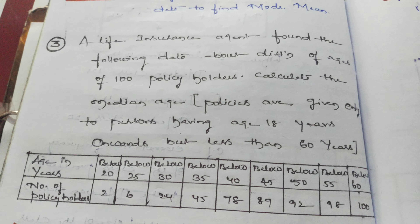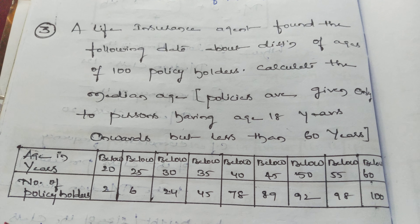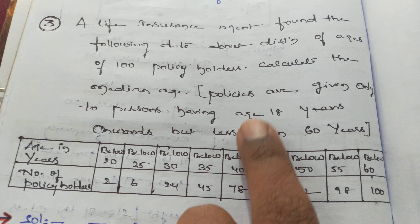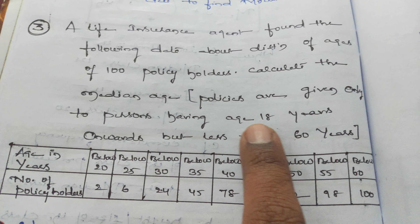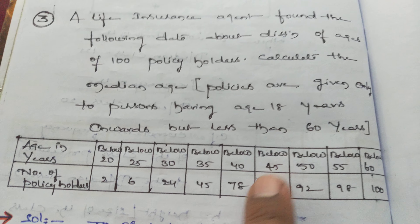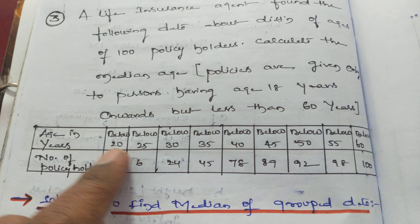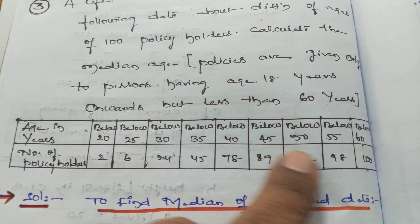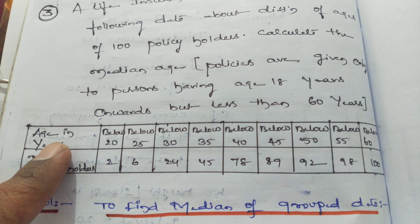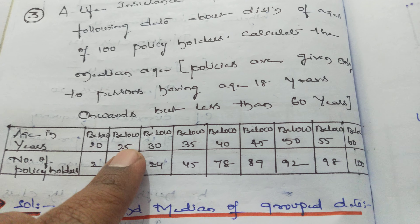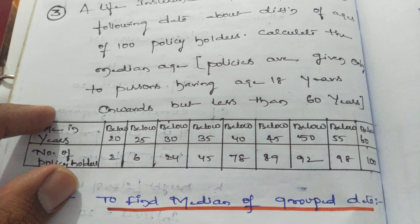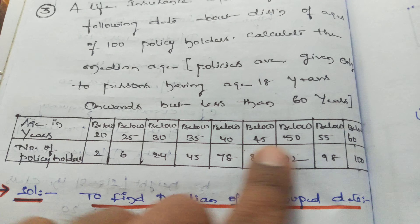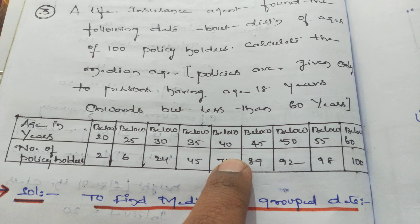Third sum of Exercise 14.3: a life insurance agent found the following data about the distribution of ages of 100 policy holders. Calculate the median age. Policies are given only to persons having age 18 years onwards but less than 60 years. The data has class intervals and frequency, but this is somewhat different — the age is given as 'below 20', 'below 25', and so on. We have to convert this data into class intervals, then we can proceed. The number of policy holders — the frequency — is given, but this is not the actual frequency.